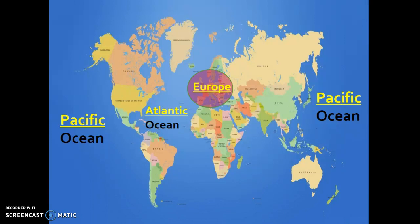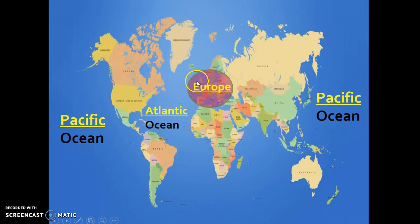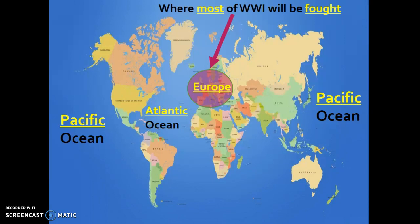The focus for today and for most of this unit is going to be the European continent. World War I starts in the area of Europe called the Balkan Peninsula, and that will eventually spread to all of Europe and to the rest of the globe. For the sake of today, we're going to focus on the fighting that happens in Europe — specifically on the western front, which borders France, and on the eastern front, which borders Russia. Make sure you've got all six blanks filled in before we jump to the next slide.